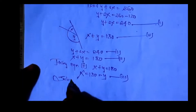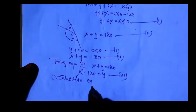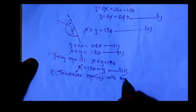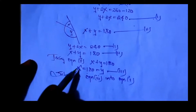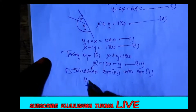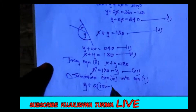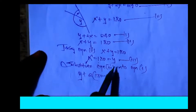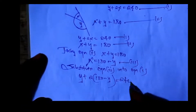Substitute equation number 3 into equation 1. Since this is the value for X, we replace X in equation 1: Y plus 2 times (108 minus Y) equals 230.